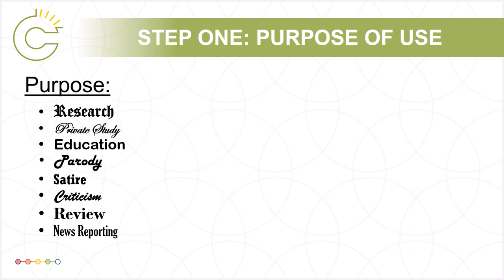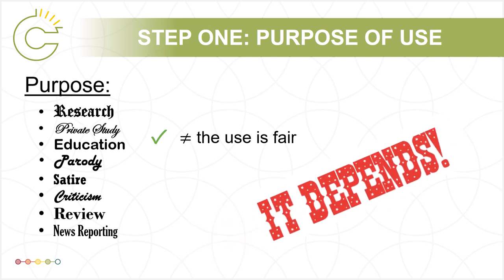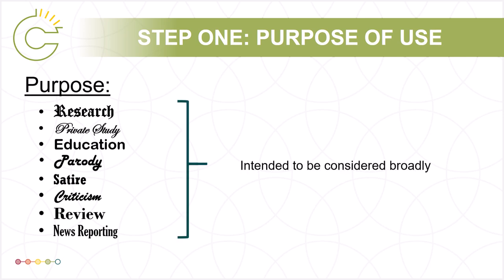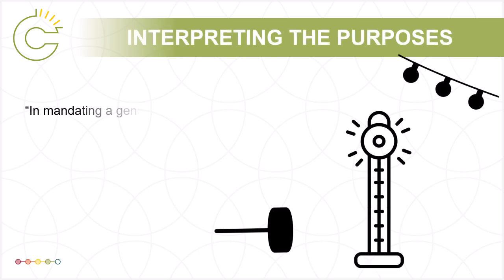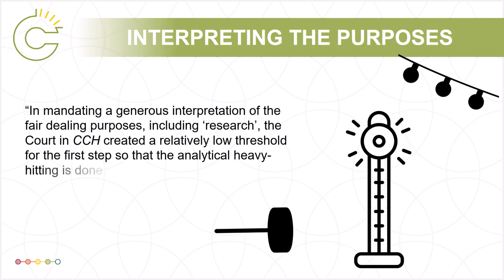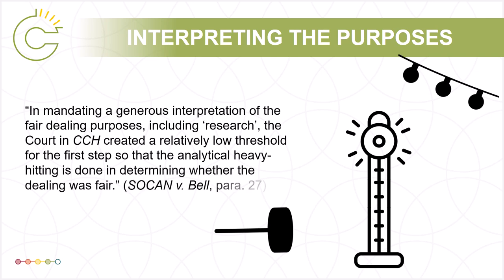Just meeting one of the purposes in the first step doesn't mean the use is fair — it depends on the outcome of the second step, the six factor test. The first step makes it clear that if your use falls outside of the eight purposes, you cannot rely on fair dealing. However, the eight purposes are intended to be considered broadly. For example, listening to short previews of music before purchasing is considered research. The Supreme Court in CCH created a relatively low threshold for the first step so that the analytical heavy hitting is done in determining whether a dealing was fair.